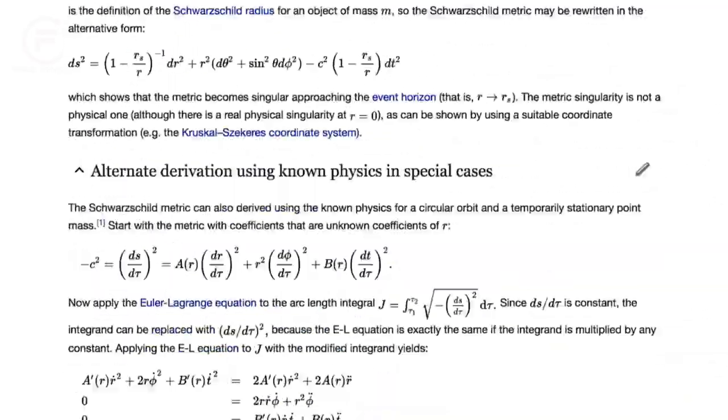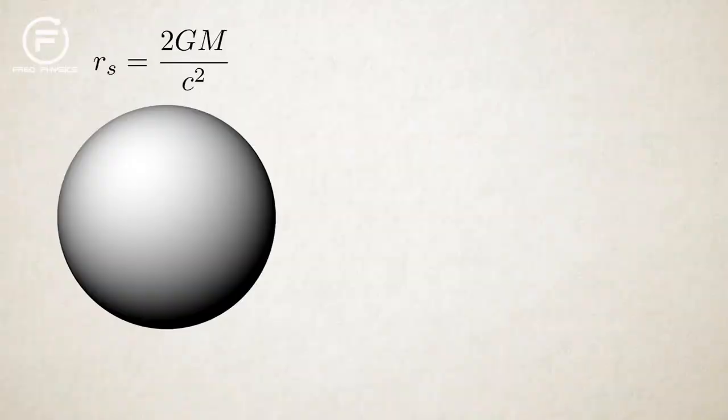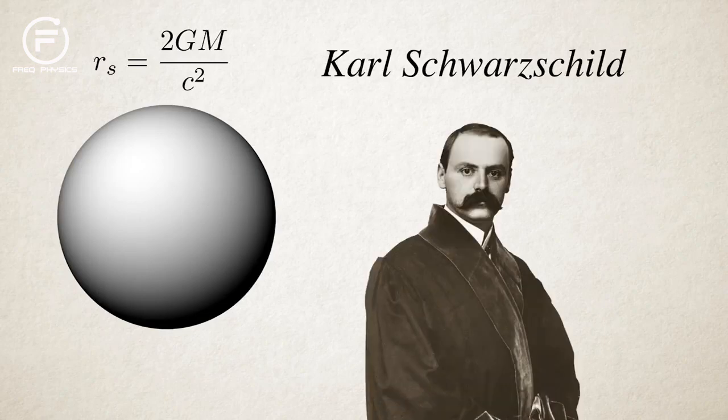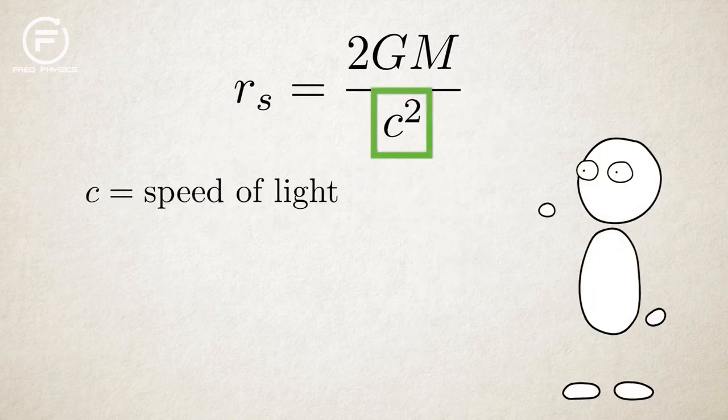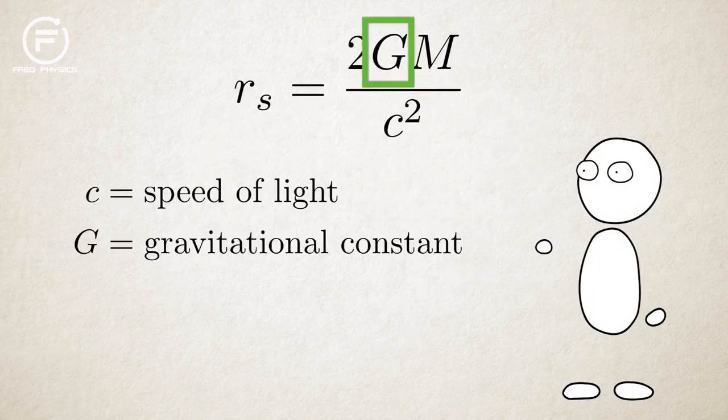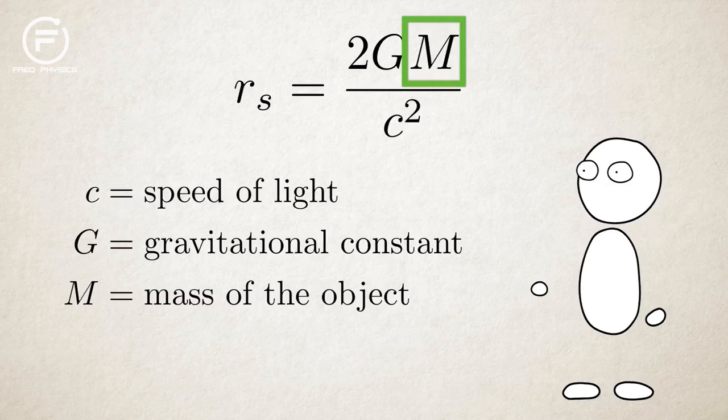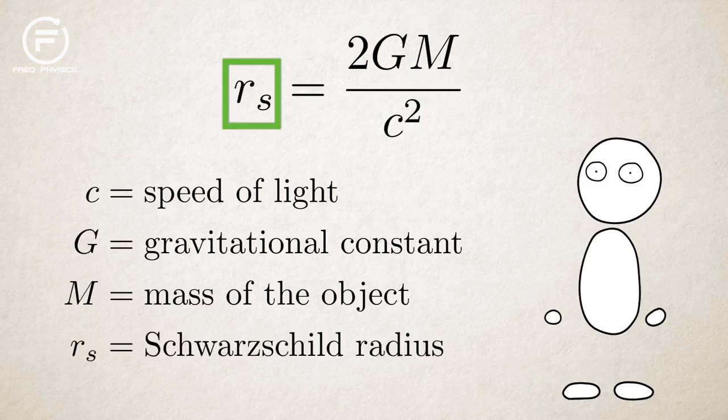You can easily derive their exact solution for a single spherical non-rotating mass if your name is Carl Schwarzschild and you're a genius physicist with a badass mustache, and then you end up with this simple-looking formula. Let's unpack it. C is the speed of light, G is the gravitational constant, M is the mass of the object, and RS is the Schwarzschild radius.